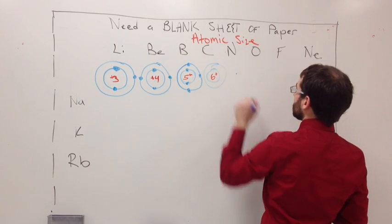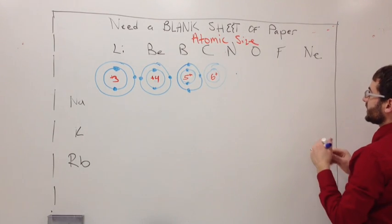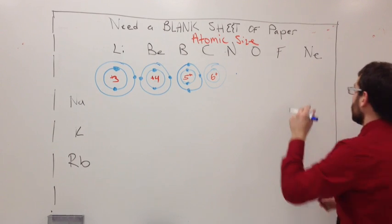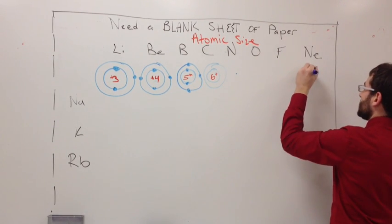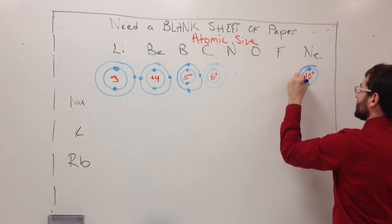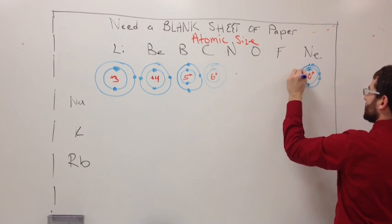And then you can see that it's going to keep on getting smaller and smaller until you get to neon. Which neon's number is number ten. So it's going to have ten plus. It's going to have two in here. And then around it it's going to have eight.